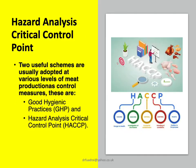As far as quality assurance of meat is concerned, two useful schemes are usually adopted at various levels of meat production: Good Hygienic Practices (GHP), and Hazard Analysis Critical Control Point (HACCP). The HACCP scheme for quality assurance of meat is illustrated in the accompanying slide.